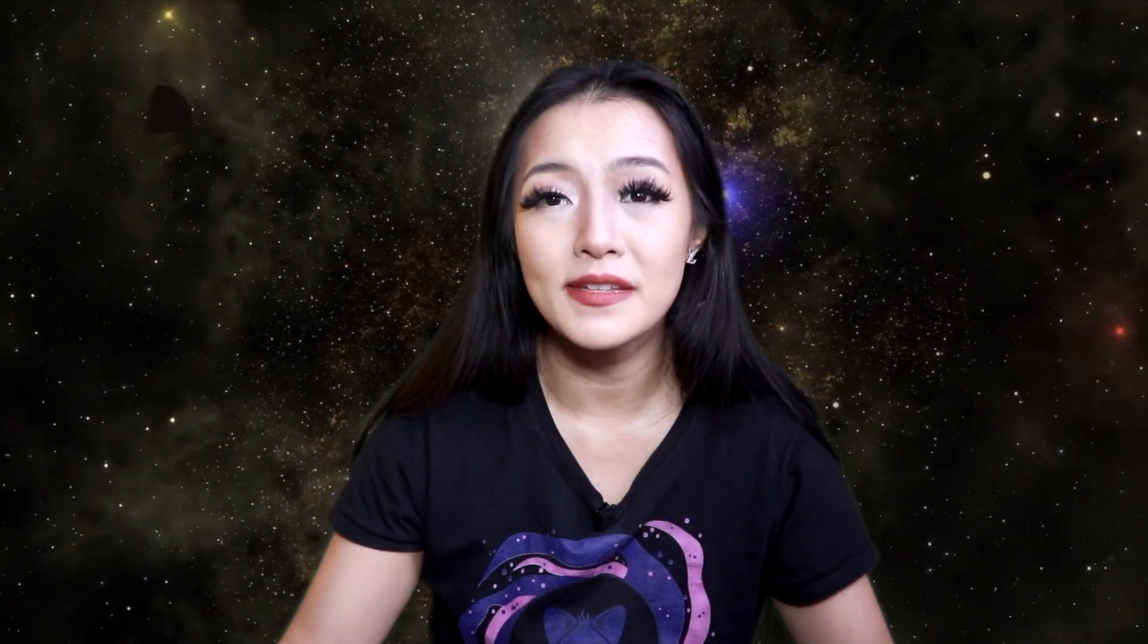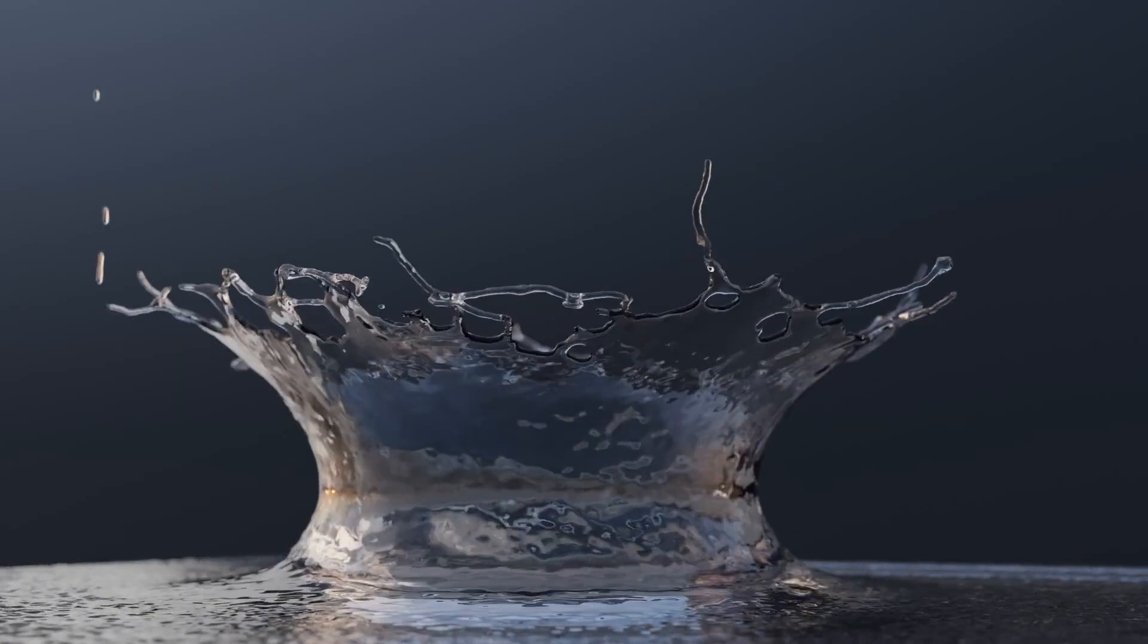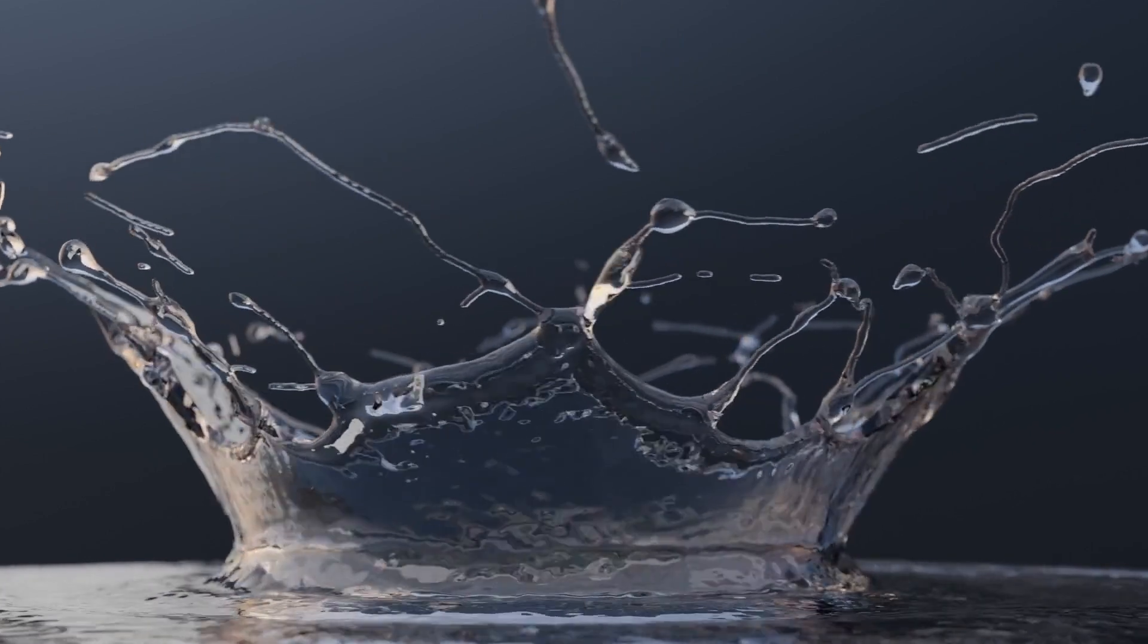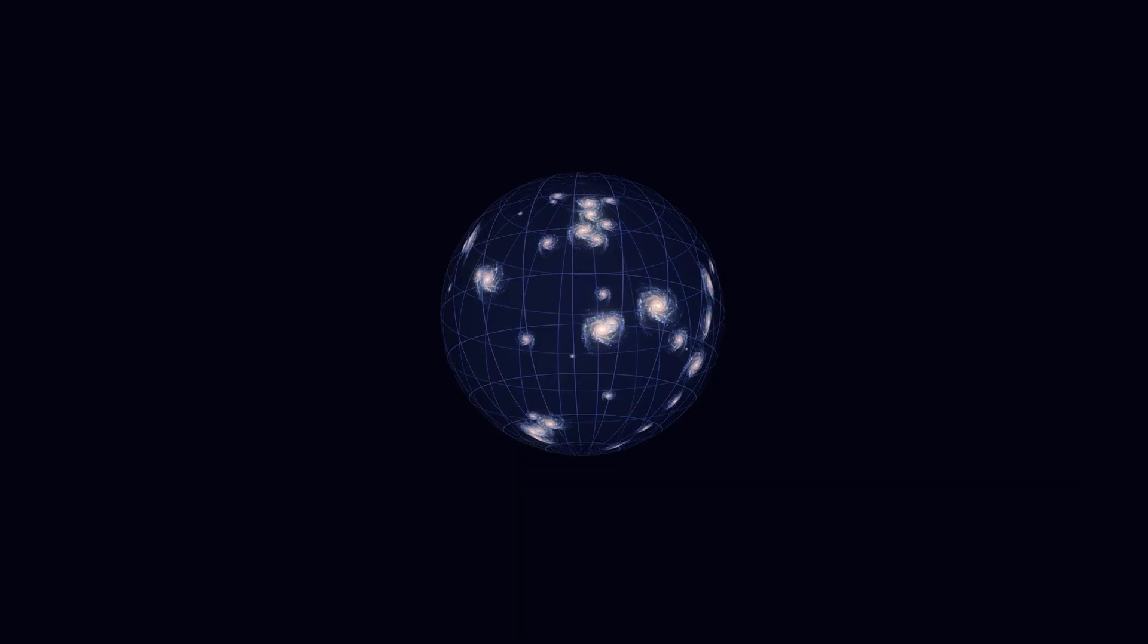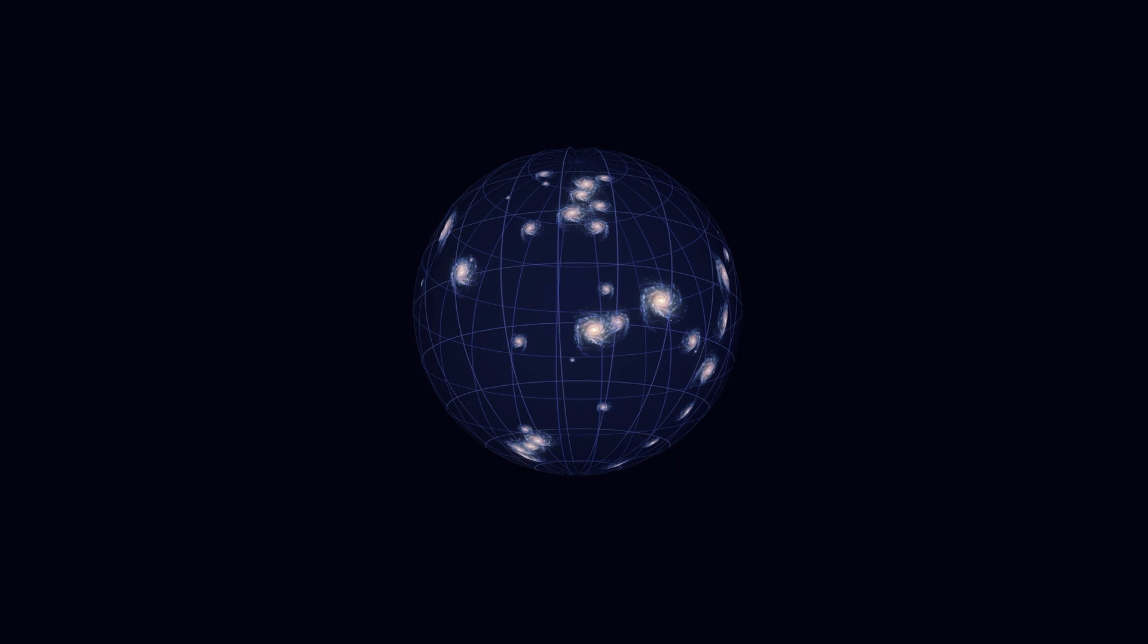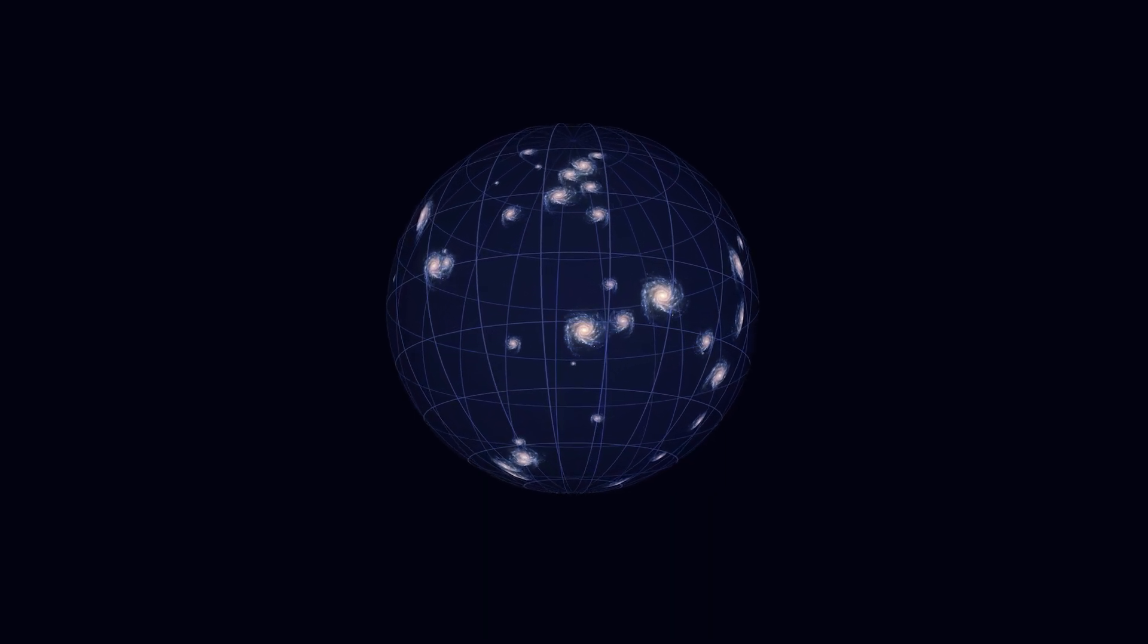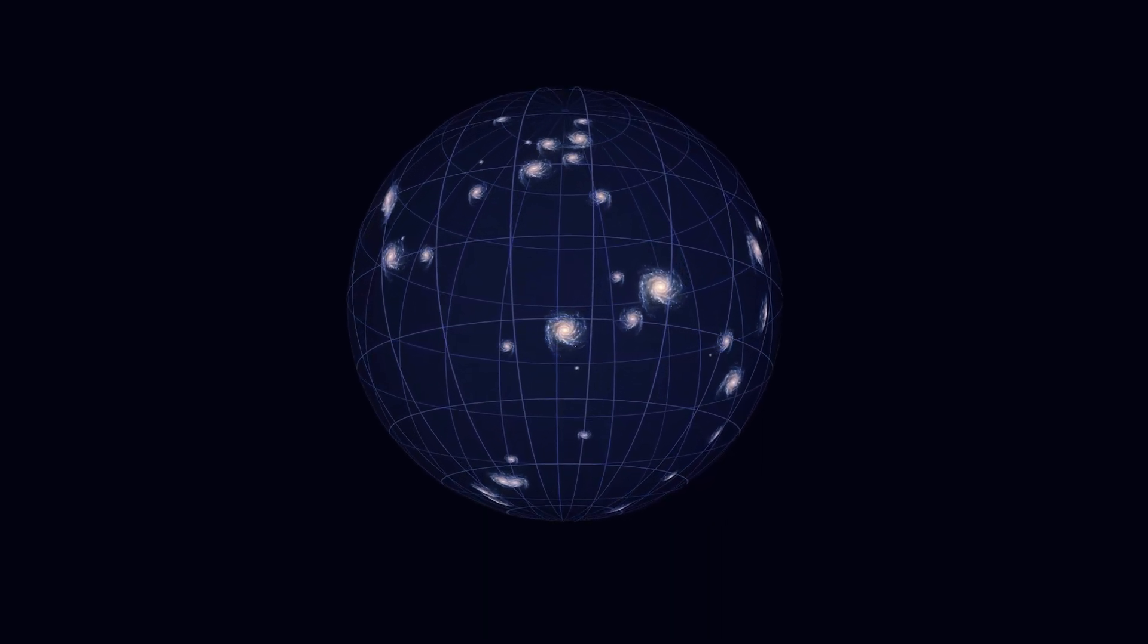At the splashback radius, the infalling matter reaches its maximum radial velocity and then it starts moving away from the center, similar to water droplets splashing back when it hits a surface. This behavior is a consequence of a combination of two effects, the gravitational attraction of the galaxy cluster and the expansion of our universe.